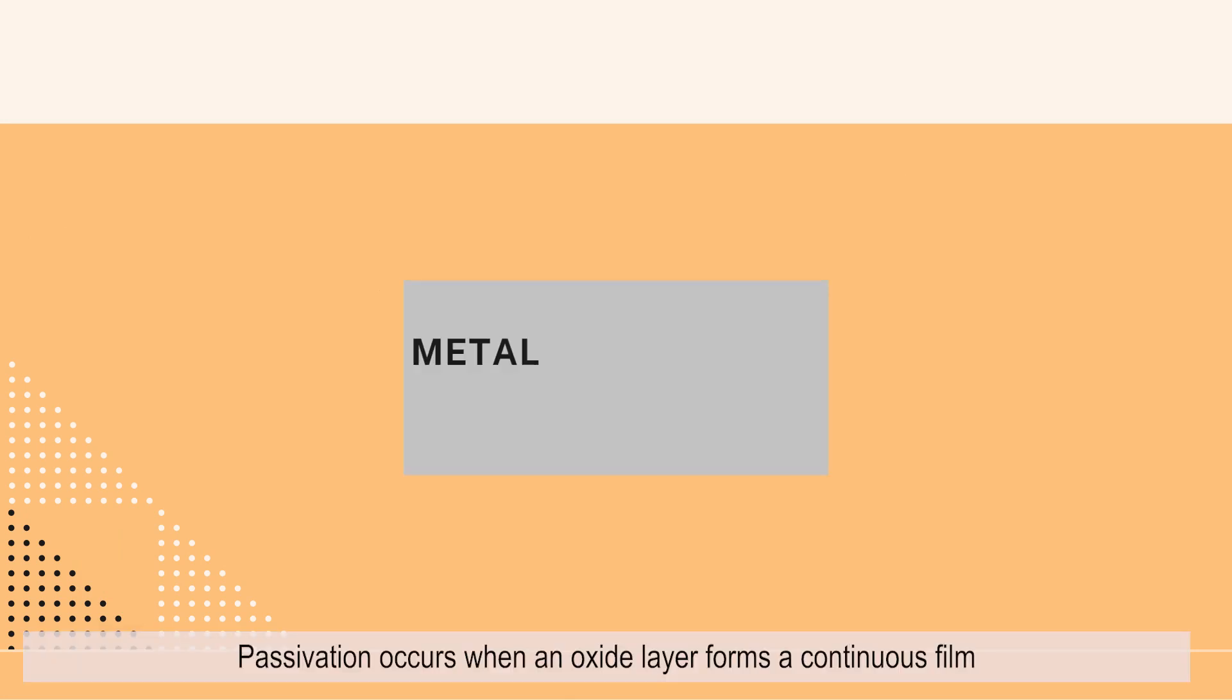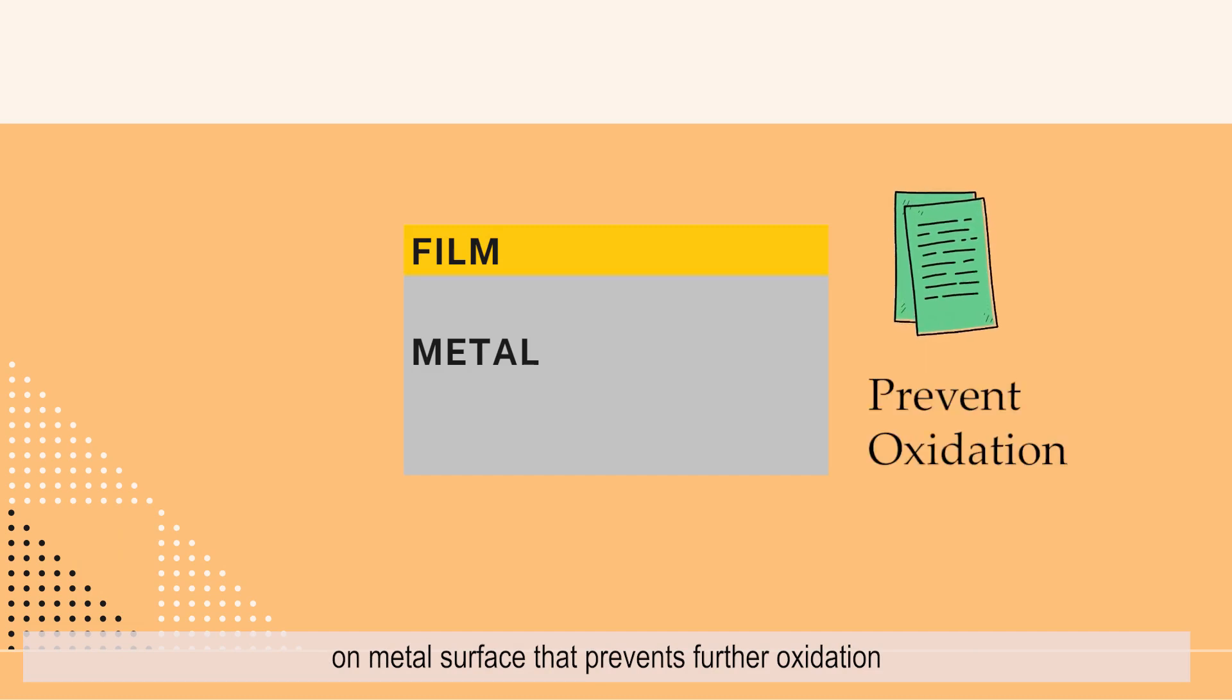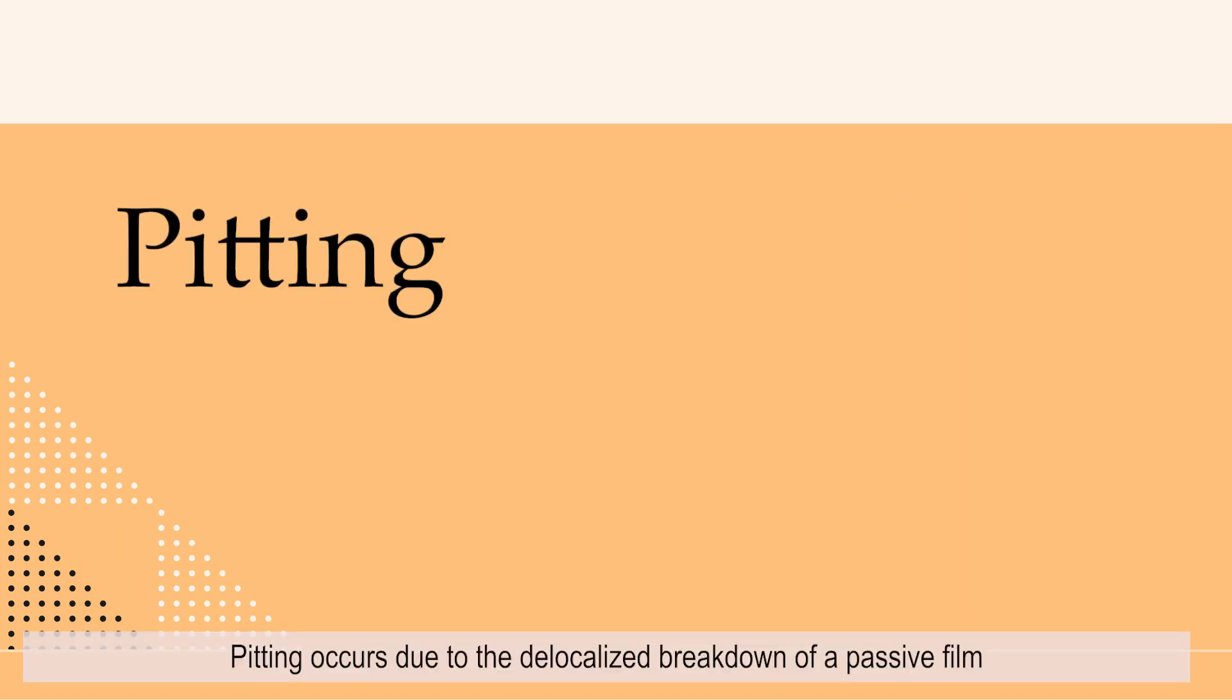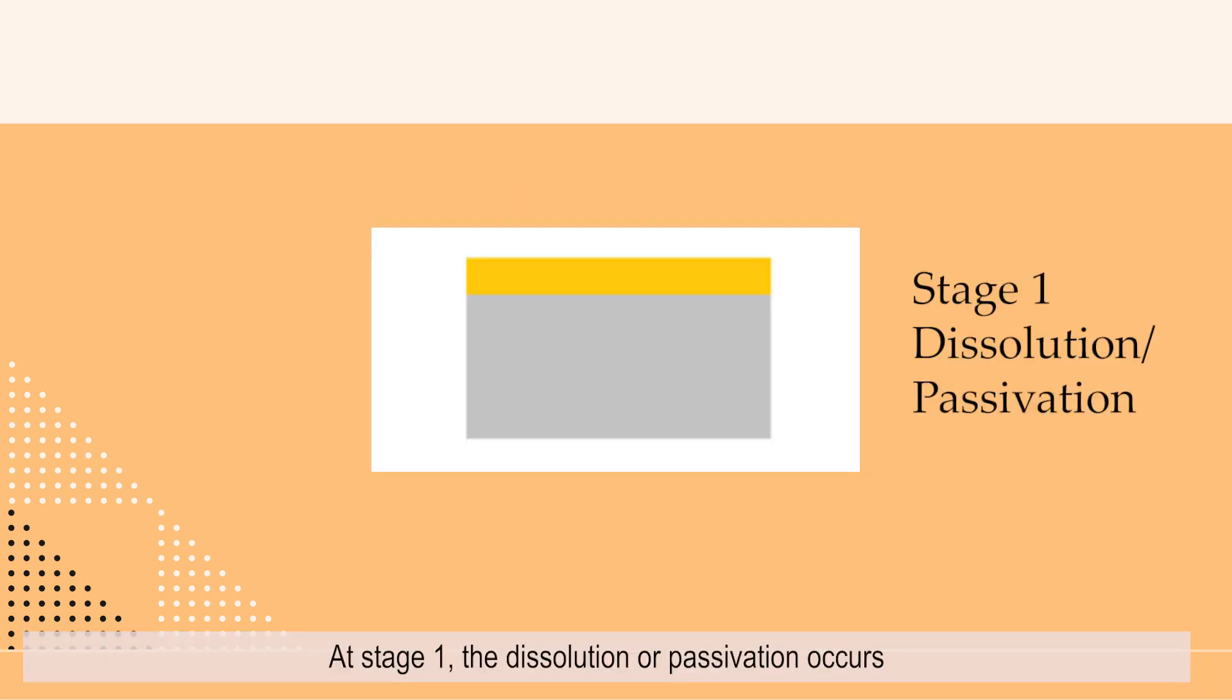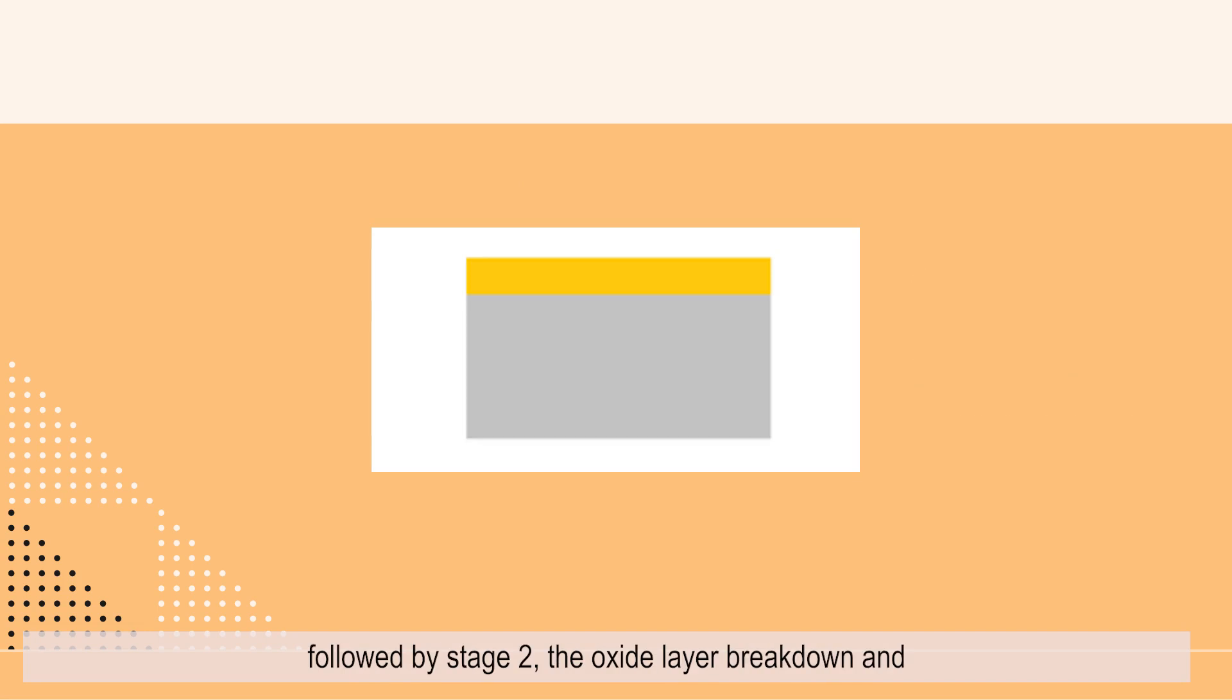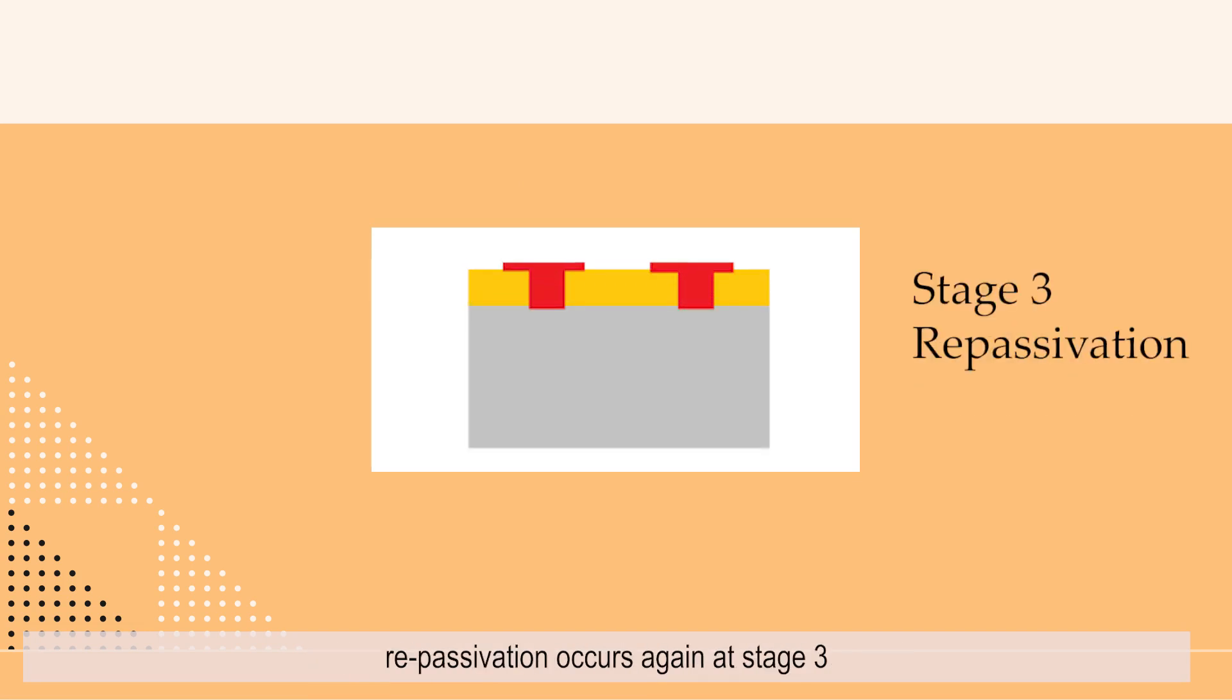Passivation occurs when an oxide layer forms a continuous film on metal surface that prevents further oxidation. Pitting occurs due to the delocalized breakdown of a passive film. At stage 1, the dissolution or passivation occurs, followed by stage 2, the oxide layer breakdown, and repassivation occurs again at stage 3.